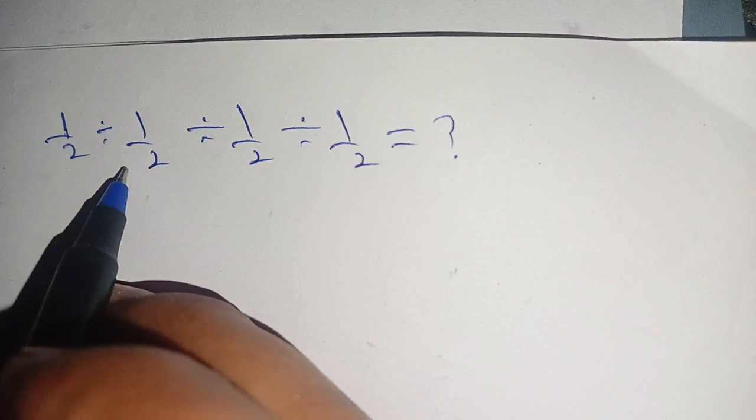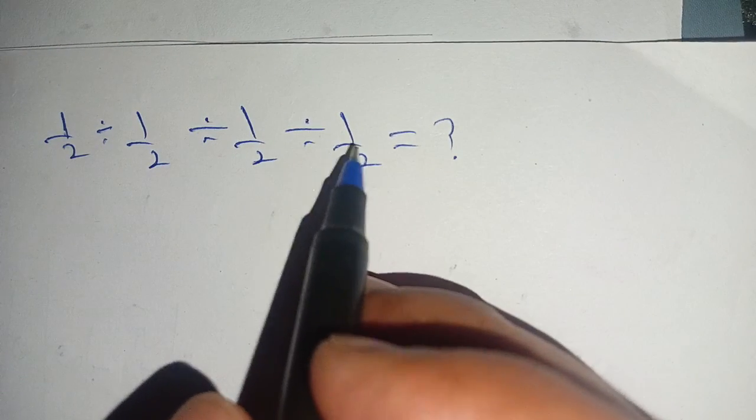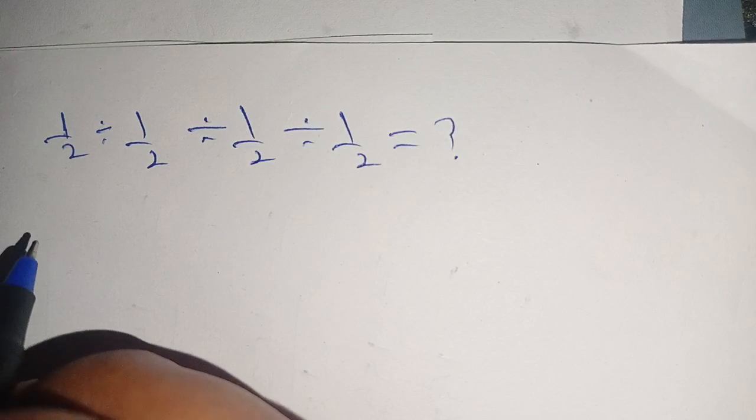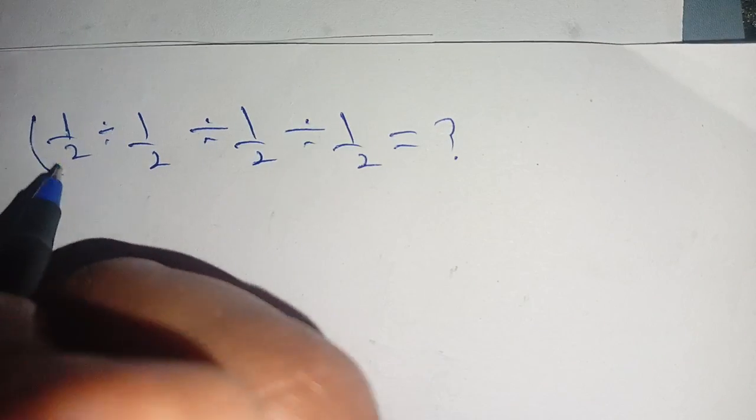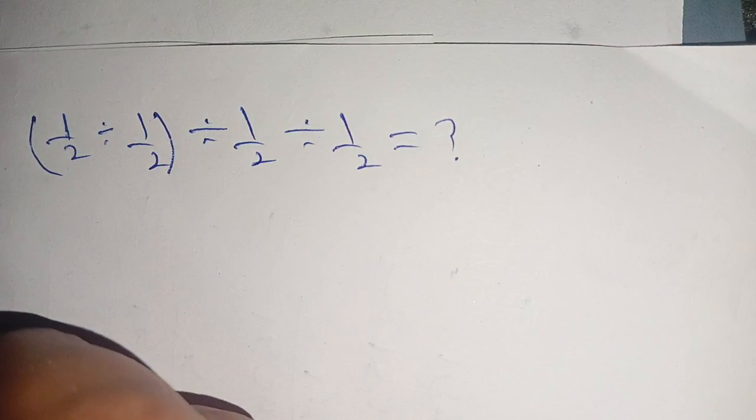How to solve 1/2 divided by 1/2 divided by 1/2 divided by 1/2? Let us solve this. First of all, we take the first two terms. We solve this and write this as: